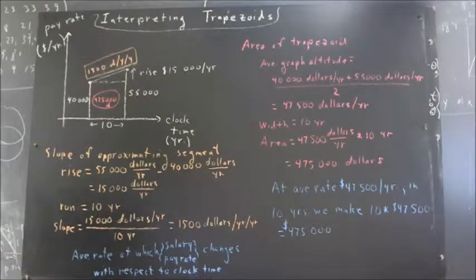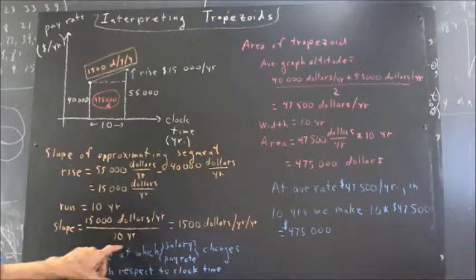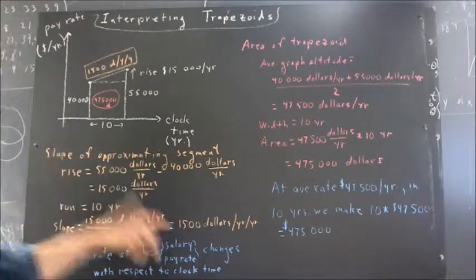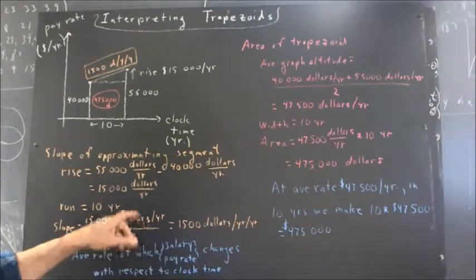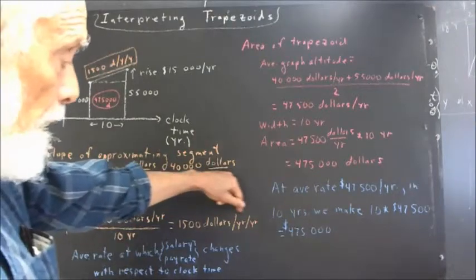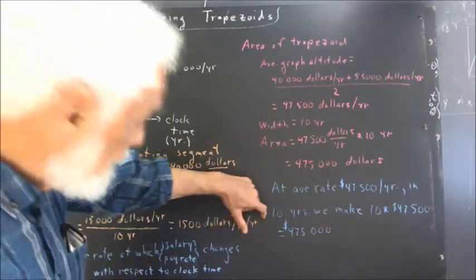Okay, the slope, then, is rise divided by run, $15,000 per year divided by 10 years, which comes out 10 into 15,000 is $1,500, and dollars over years divided by years. I've written here as dollars over years over years, read as dollars per year per year.